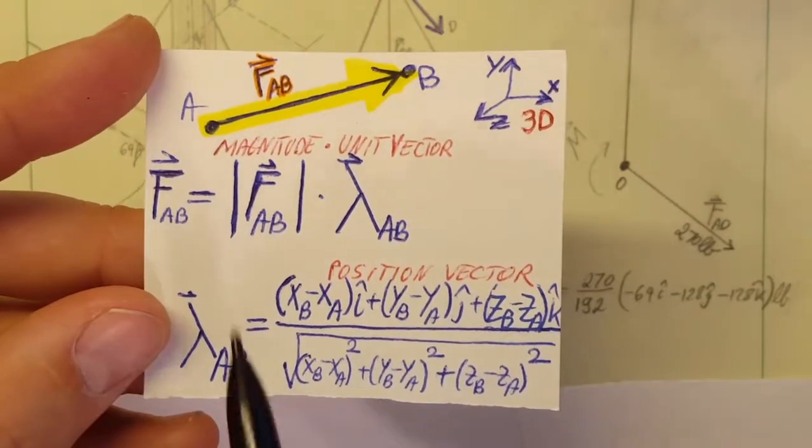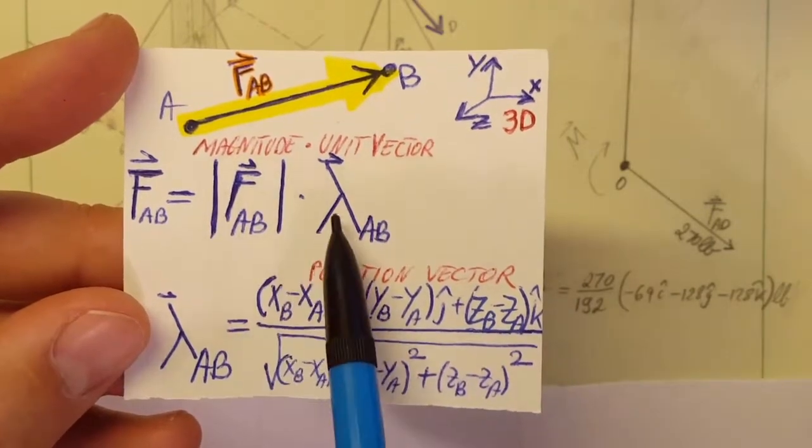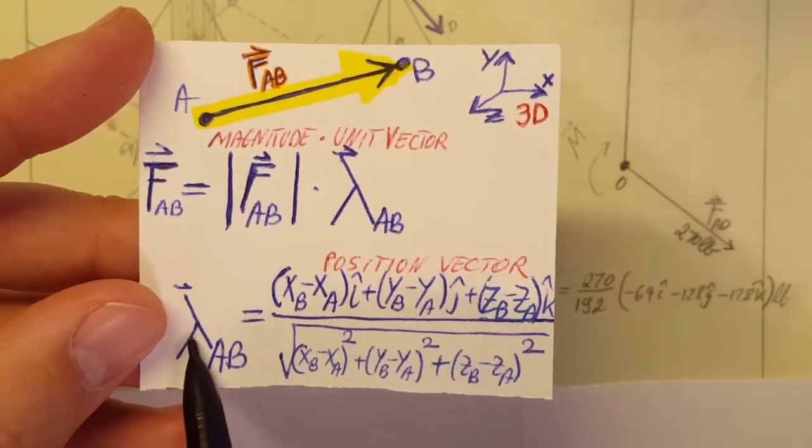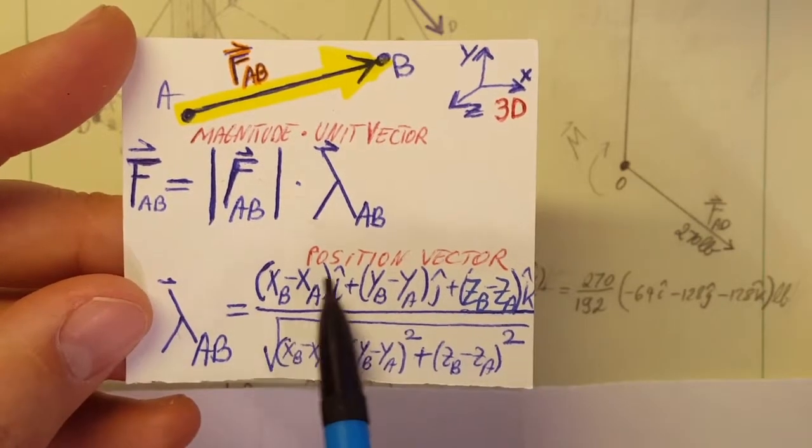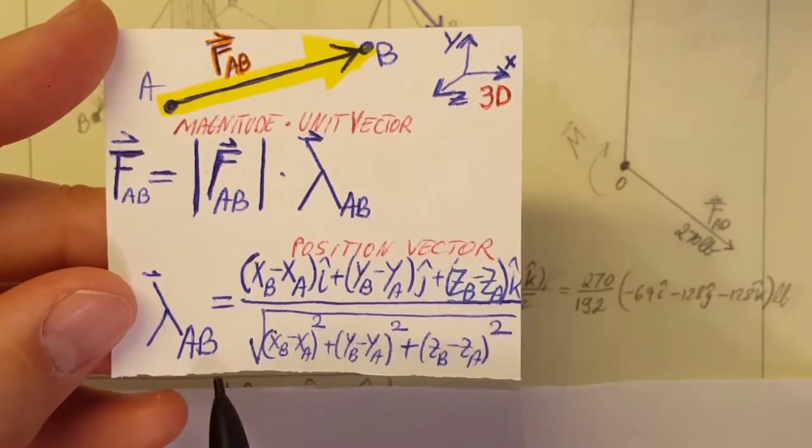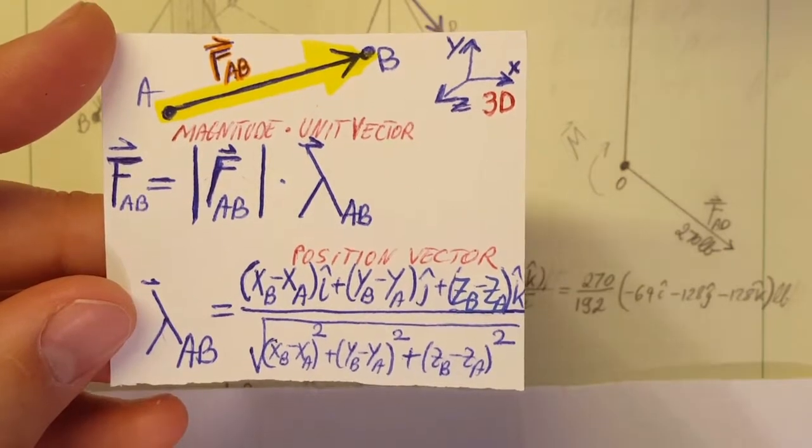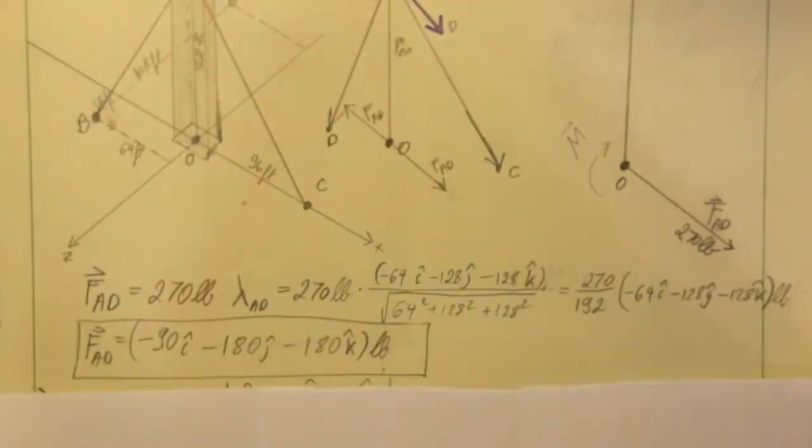And the unit vector we can calculate by the position vector and divide it by its magnitude. Okay, that is what we're using here.